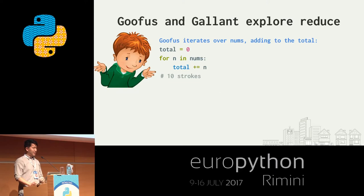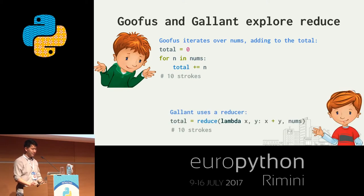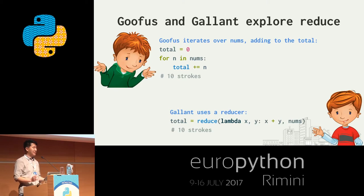Now reduce: to compute the total sum of all numbers in a list, Goofus initializes `total = 0`, iterates over the list, and adds each number — 10 strokes. Gallant has an accumulator function `lambda x, y: x + y`, runs `reduce` over nums, and gets the total the same way — also 10 strokes, about the same thing, but shorter and compact, fitting on one line. Great for a widescreen monitor.